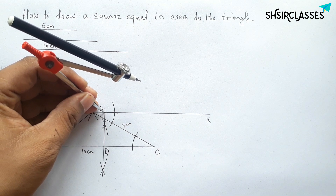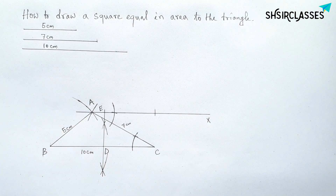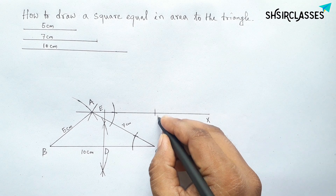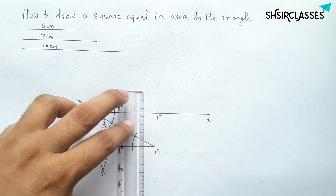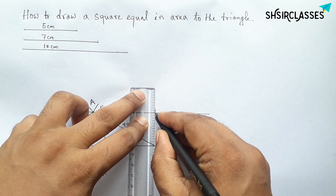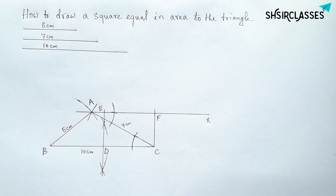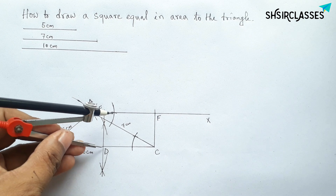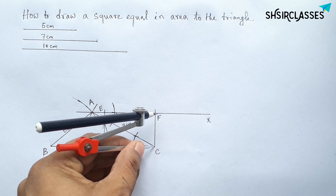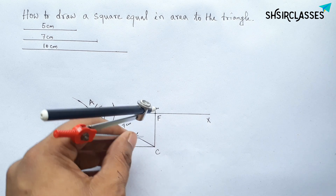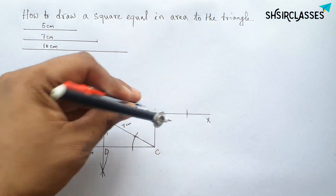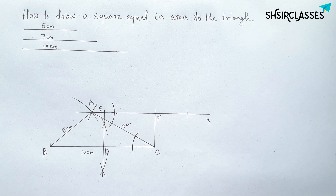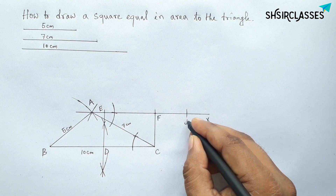Note that DC and BD are equal. Place the compass on point E with length DC and cut line AX to mark point F. Join C to F. Next, take length DE, which equals CF, place the compass on point F, and cut line AX to mark point J.